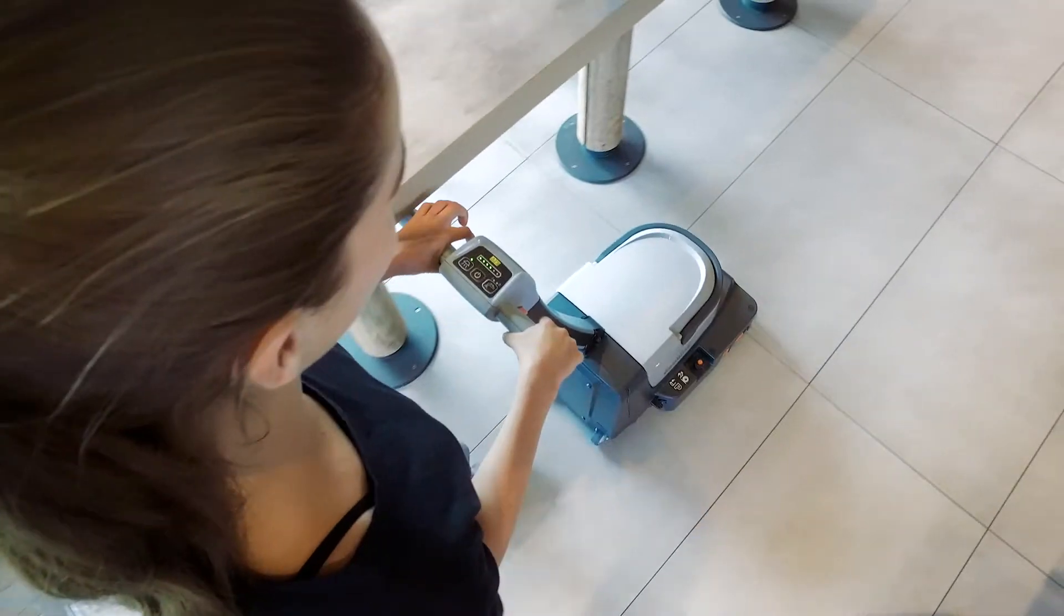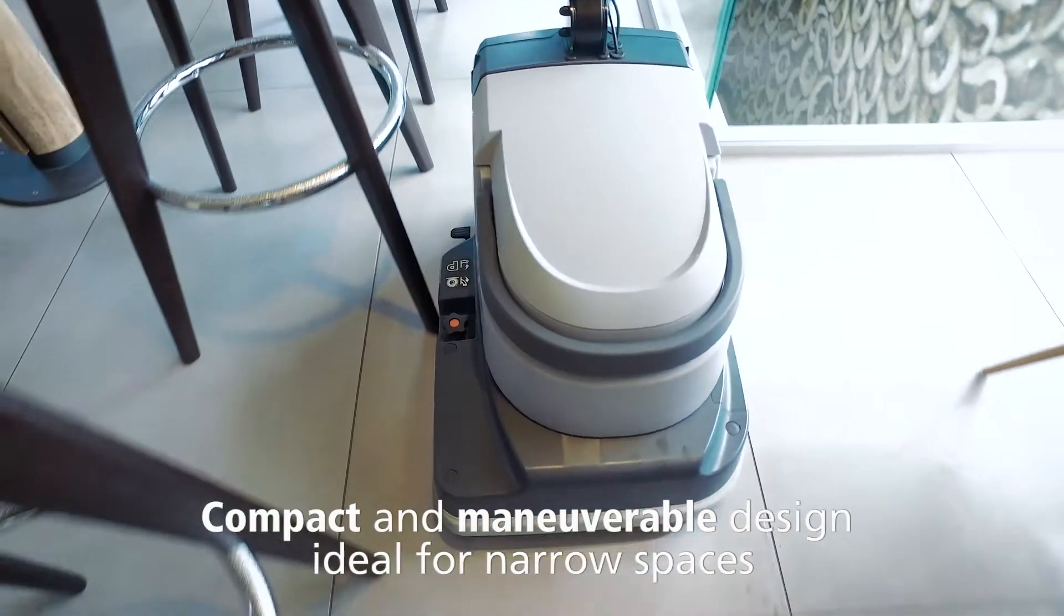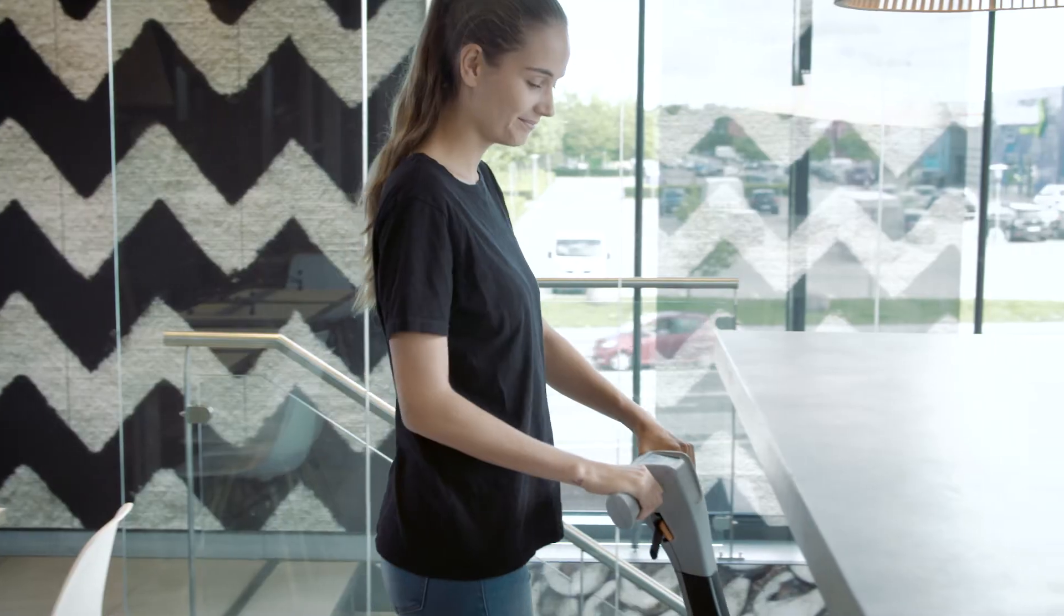The compact and maneuverable scrubber dryer is the ideal choice for cleaning in small areas. It offers high cleaning performance, both forward and in reverse, and gets into every corner.